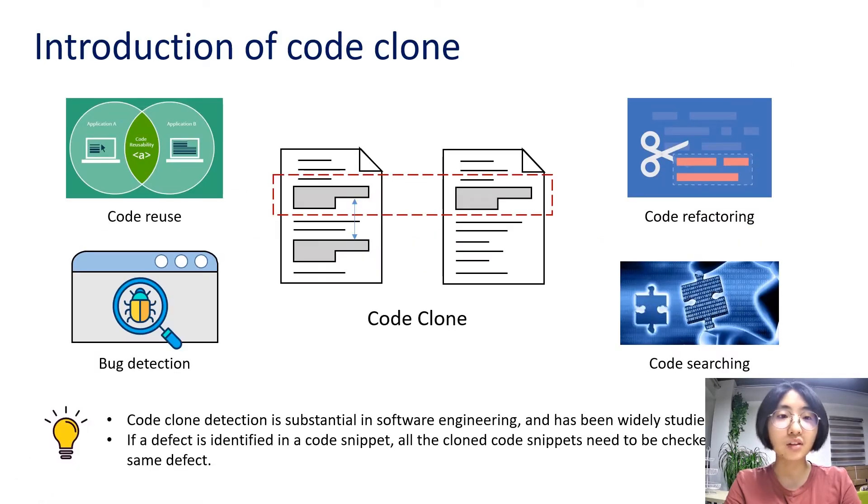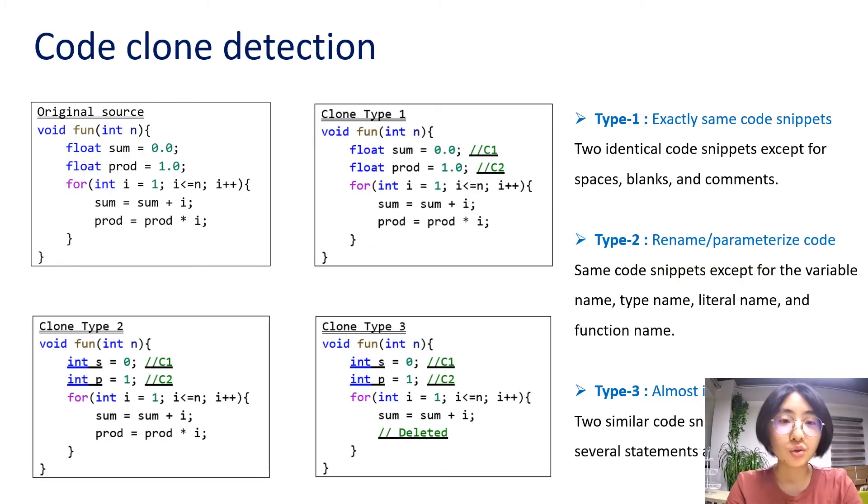The topic of our paper is code clone. Code clone detection is substantial in software engineering and has been widely studied. If a defect is identified in a code snippet, all the cloned code snippets need to be checked for the same defect. First, I want to briefly introduce code clone detection, which is the main task of our paper. Code clone can be divided into four types according to different similarity levels. The code snippet in the upper left corner is an original code, and the other three code snippets are clone examples of type 1, 2, and 3 respectively. In these figures, there are some underlying parts.